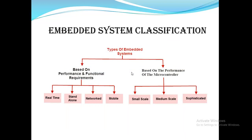Embedded systems are classified based on two things: performance and functional requirements, and microcontroller performance. Based on performance and functional requirements, they are divided into real-time, standalone, network, and mobile. Based on microcontroller performance, they are classified as small-scale, medium-scale, and sophisticated.